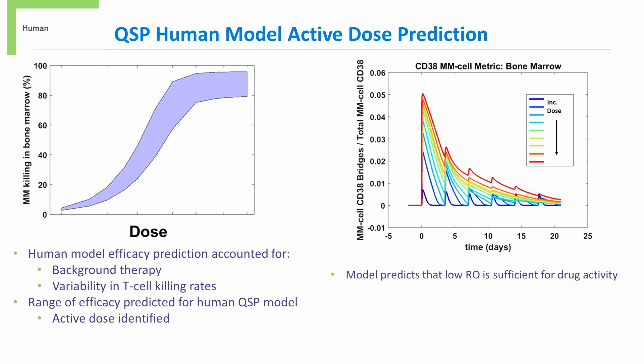By accounting for background therapy and variability in T-cell killing rates, we conducted a virtual clinical trial whereby we subjected in silico patients to increasing doses of tri-specific antibody and assessed efficacy based upon the percentage of multiple myeloma cells killed within the bone marrow. As shown in the figure to the left, though a range of efficacy was predicted, we were able to identify an active dose based upon internal and external criteria.